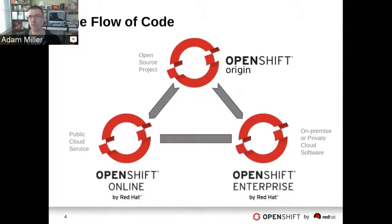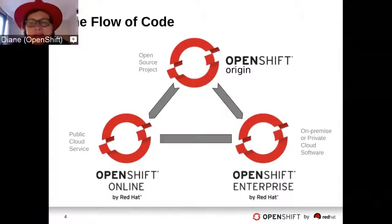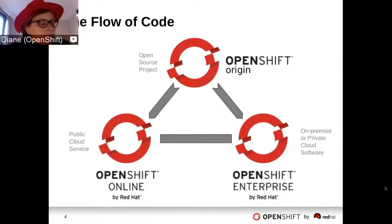We have different release cadences. Online, we release to production every three weeks, whereas enterprise averages about every six months. Enterprise releases when they're ready. With online, we have planned releases, and if features aren't ready, they just get cut. We kind of have different lifecycle cadences, but all of the code is always upstream first — and you'll probably hear me iterate on that point as I talk through some other points.